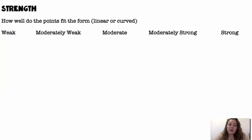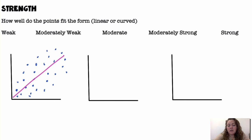Alright, strength. How well do the points fit the form? Whether it's linear or curved, how well do they fit that form? So, I'm looking at how tight the dots are to the line. So, this first one is pretty weak. I can tell that it's positive, but it's not that strong because the points are very spread out from the line.